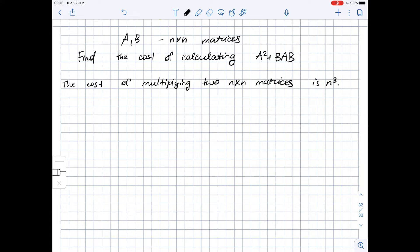This means that the cost of finding A squared is n cubed because A squared is matrix A times matrix A. So it's a product of two n by n matrices.